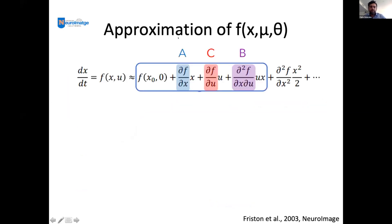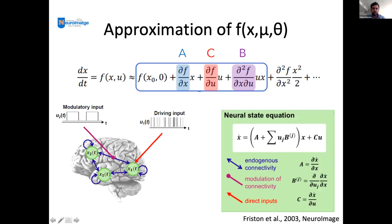To understand the approximation, x as a node is related to time as a time series. To understand this equation we use the Taylor series, which gives an approximation of the neural response. This Taylor series has three components — A, B, and C — to characterize the network.